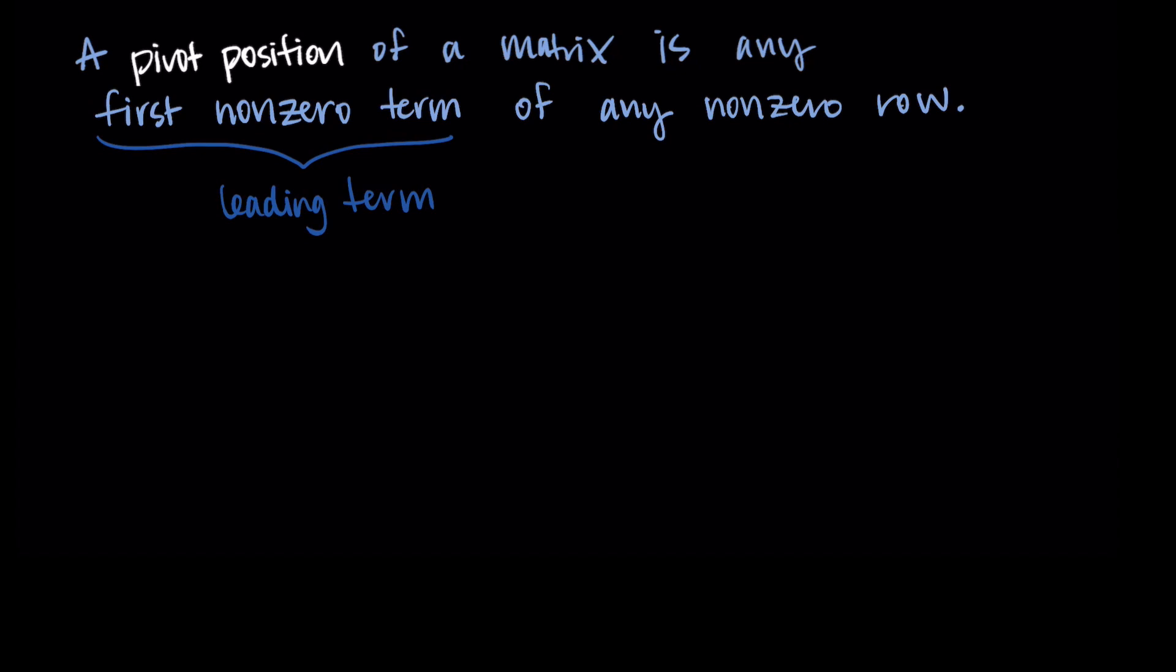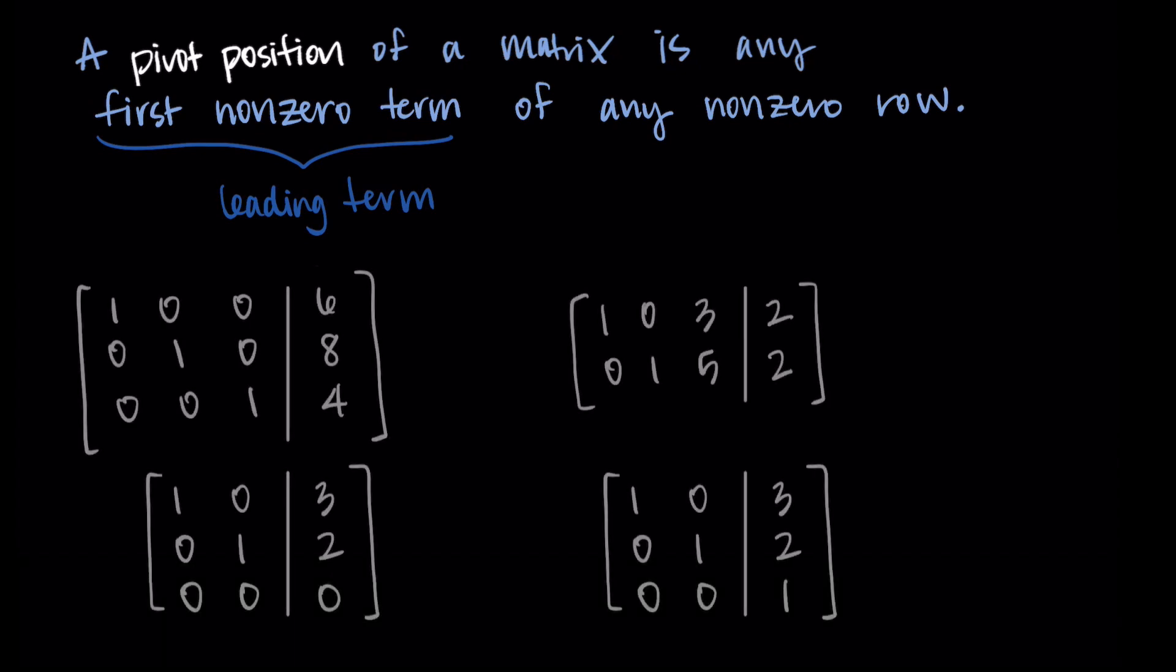Let me show you some examples. I'll put four matrices here and let's identify the pivot positions. In this first matrix, we have three rows, and all of them have values, so we don't have any zero rows. I want to circle the first non-zero term in each of those rows. It's just these ones going down the diagonal. We have three pivot positions for this matrix.